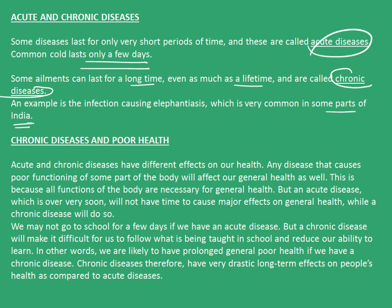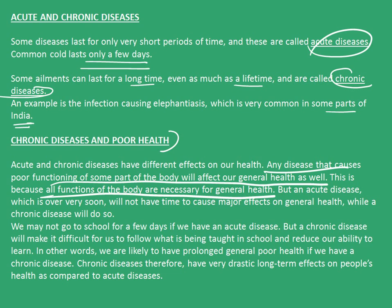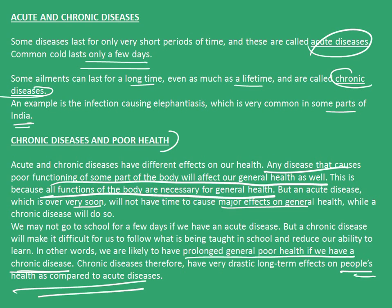Now let's see in detail what chronic diseases are and how they relate to poor health. Acute and chronic diseases have different effects on our health. Any disease that causes poor functioning of some part of the body will affect our general health as well, because all functions of the body are necessary for general health. An acute disease, which is over very soon, will not have time to cause major effects on our general health, while a chronic disease will do so. We may not go to school for a few days if we have an acute disease, but a chronic disease will make it difficult to follow what is being taught in school and reduce our ability to learn. In other words, we are likely to have prolonged general poor health with a chronic disease. Chronic diseases, therefore, have very drastic long-term effects on people's health as compared to acute diseases.